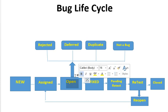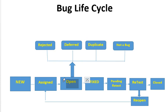The third state is Open. The developer who is assigned the bug starts working on it and moves it to the Open state, which implies the defect is work in progress. The developer recreates the defect and does an analysis. Based on this analysis, he can decide to go ahead with fixing it, or depending on various factors like priority, release timeline, and scope, he can move it to different states.